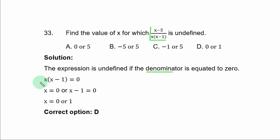The expression is undefined if the denominator is equated to 0. So you have S(S - 1) equal to 0. You equate each factor to 0 and you have S equal to 0 or S minus 1 equal to 0. If you transfer the constant term minus 1 to the right hand side, you simply have S equal to 0 or 1. D is the correct option.